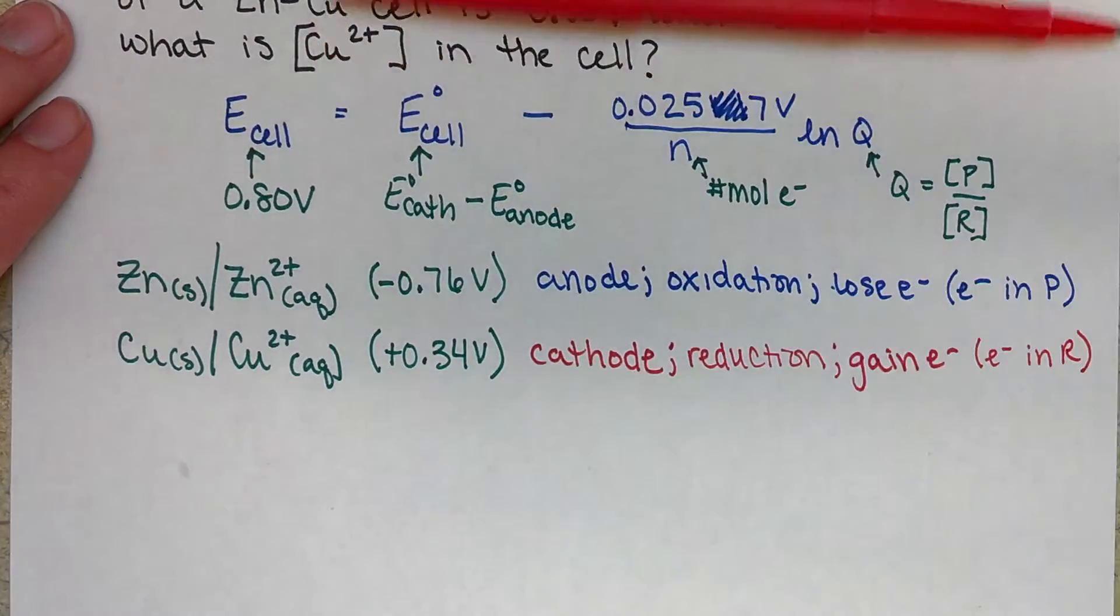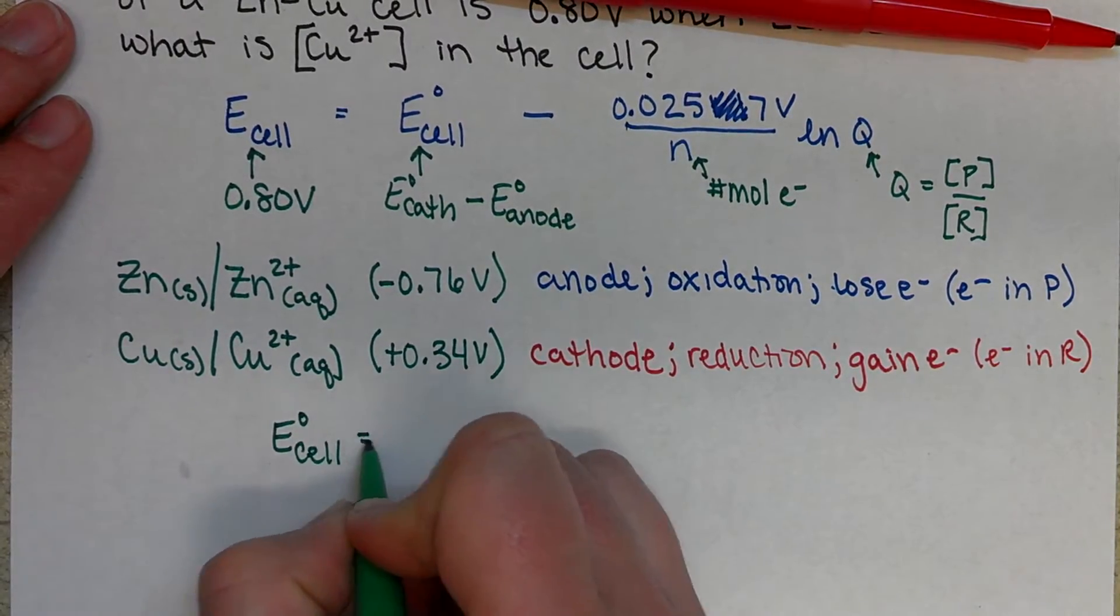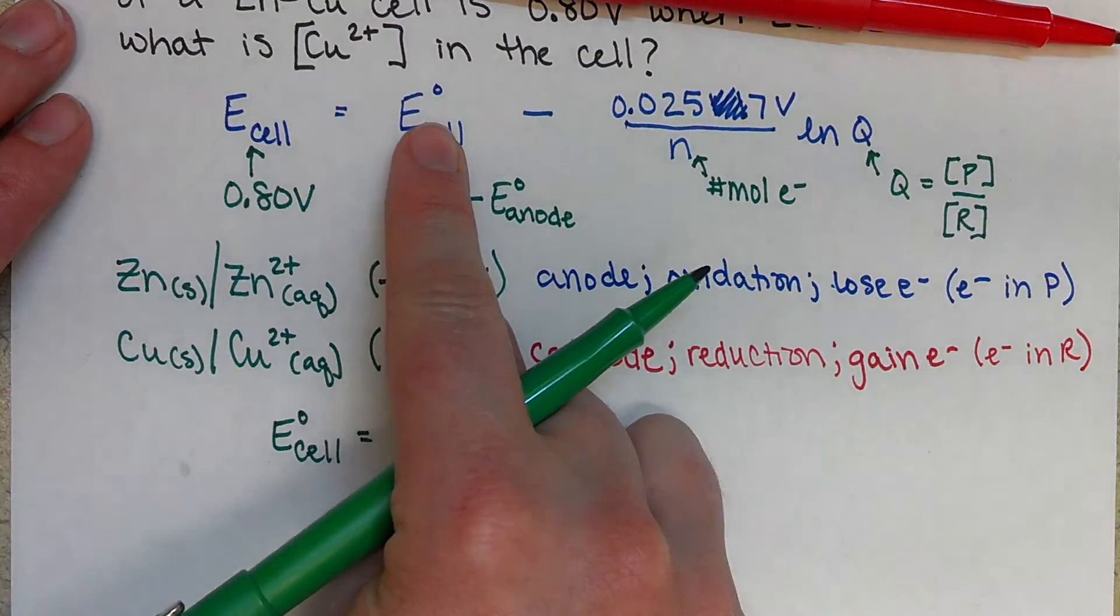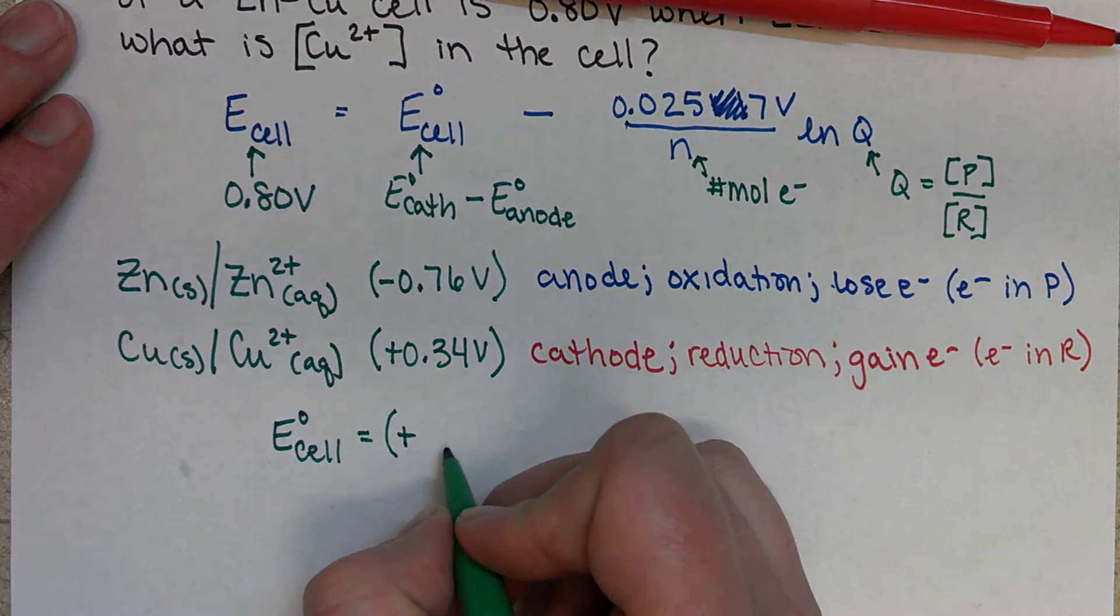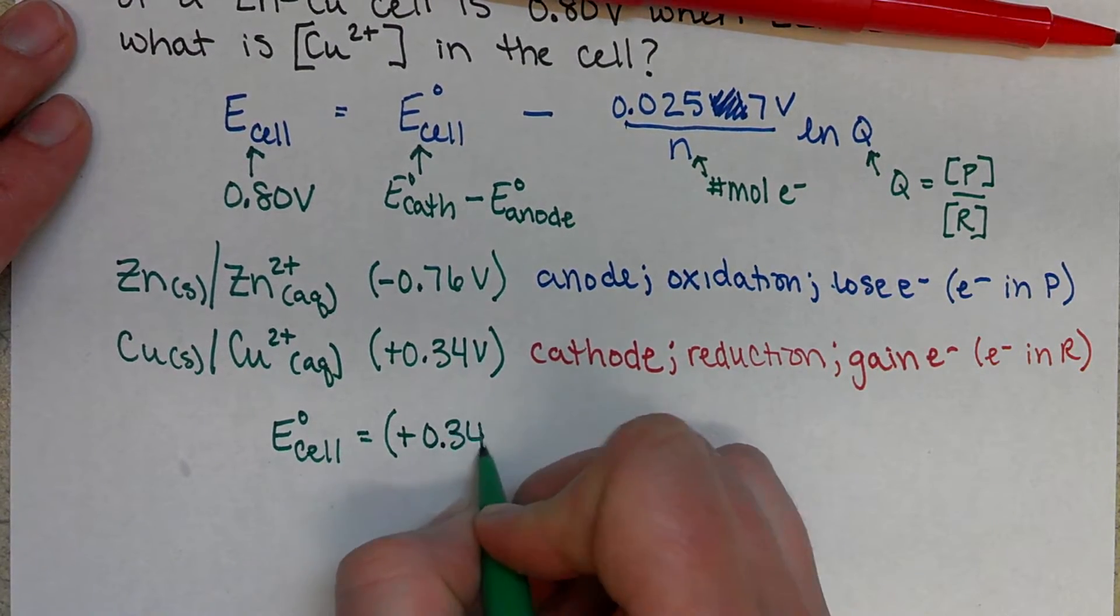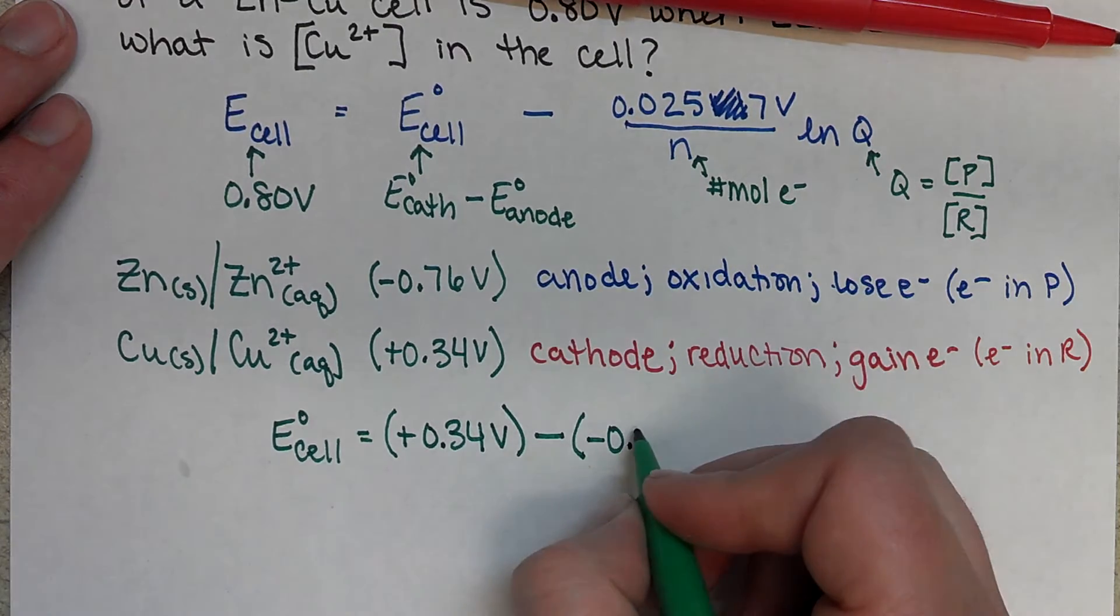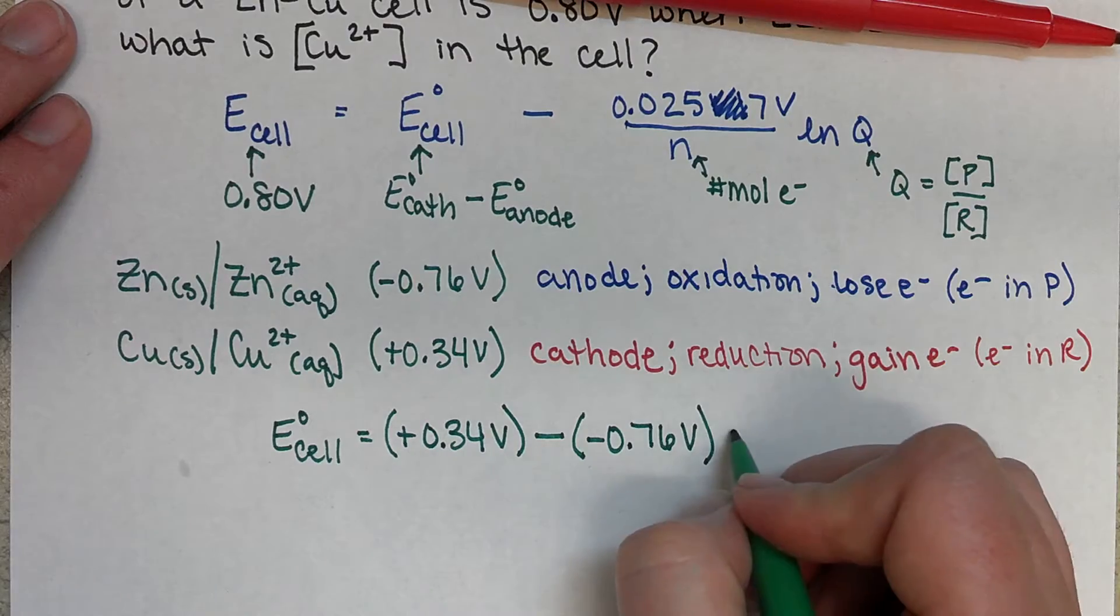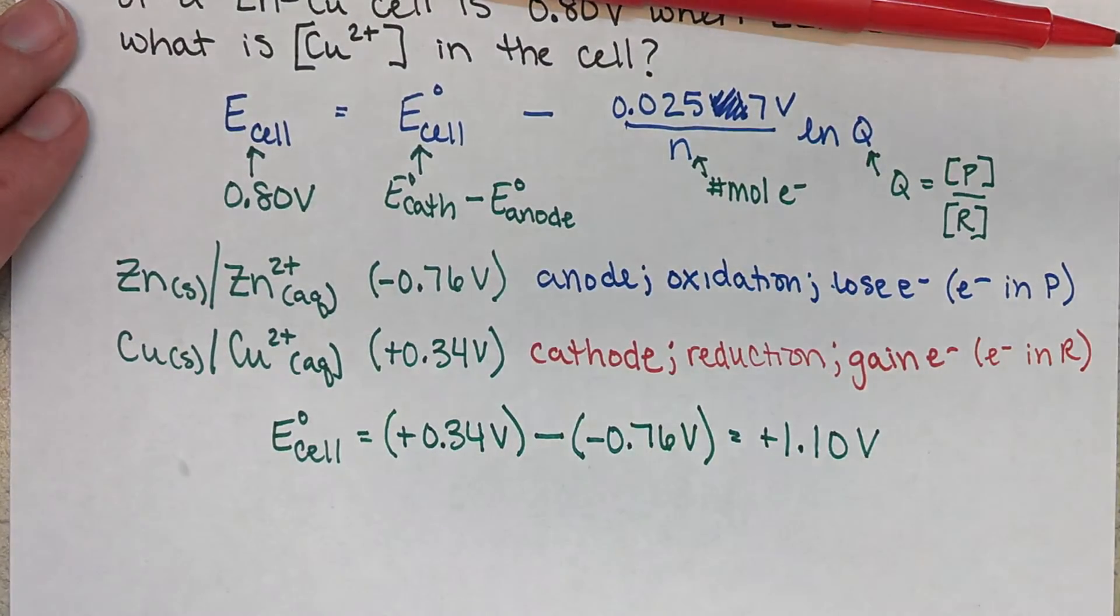So we have E-cell standard. That's our first thing that we want to calculate. That means that we know that we're going to have a positive 0.34 volts minus negative 0.76 volts, which is going to give us a positive 1.10 volts.